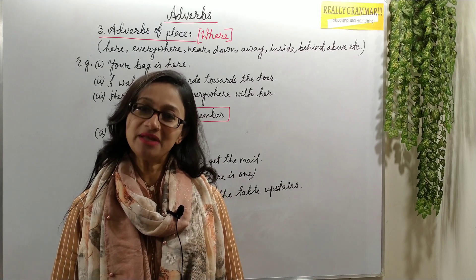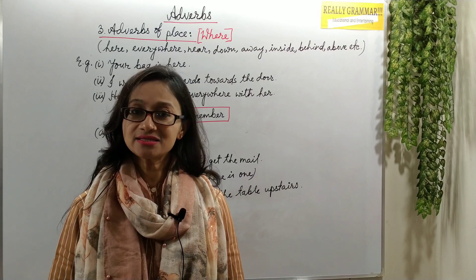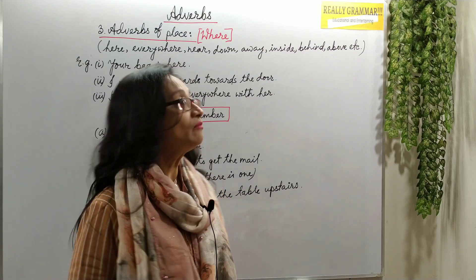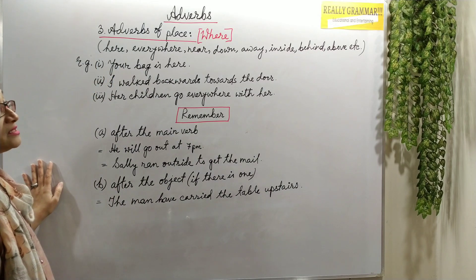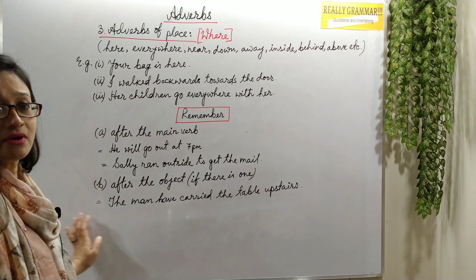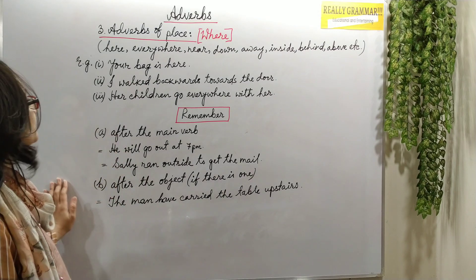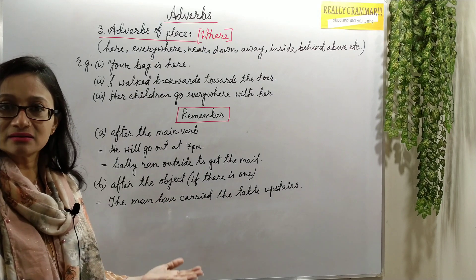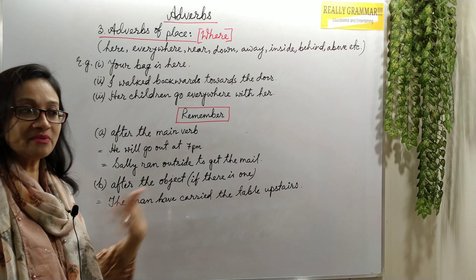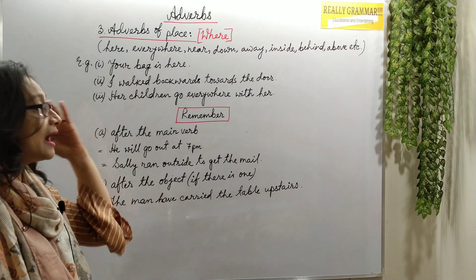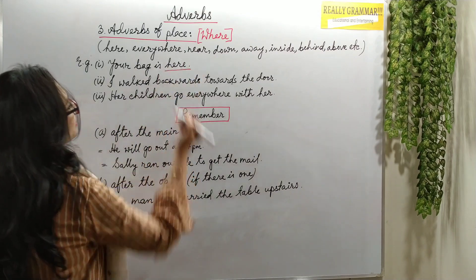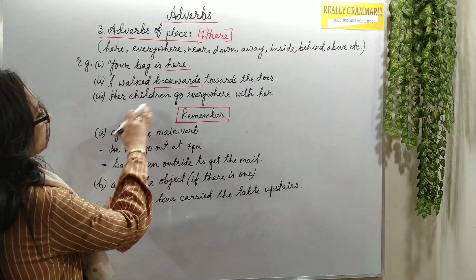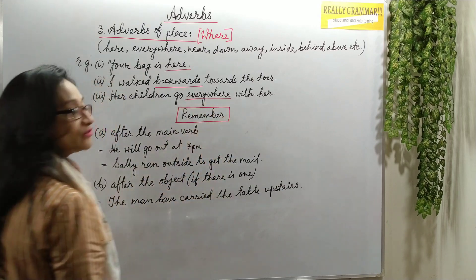Adverbs of place tell us where the action happened or will happen. They answer the question 'where.' Examples: here, everywhere, near, down, away, inside, behind, above, etc. For example: 'Your bag is here' — here answers where is the bag. 'I walked backwards towards the door' — backwards answers where. 'Her children go everywhere with her' — everywhere answers where.